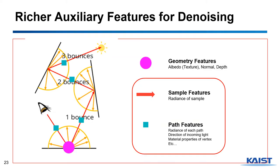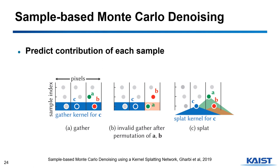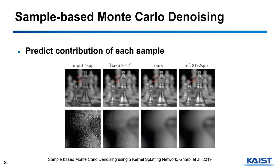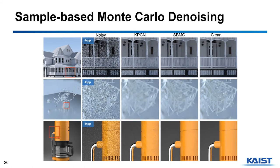If we utilize more specific features than geometric features, denoising performance will increase because there will be more information available. For example, this work predicts sample-wise kernels, meaning the neural network is trained to predict the contribution of each sample to nearby pixels. Note that pixel radiance is determined by the average of the sample radiance. It also uses the splatting kernel instead of the gather kernel. By applying the kernel for each sample, it increases denoising performance compared to the previous kernel-predicting convolutional network. Utilizing sample features shows better reconstruction for high-frequency details and fewer visual artifacts.